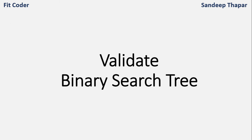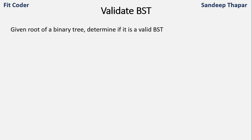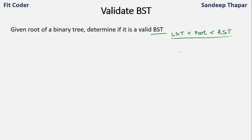In this video we will discuss how we can validate a binary search tree. We are given a binary tree and we have to find out whether it is a valid binary search tree. For a binary tree to be a BST, it should satisfy the property that the left subtree nodes should be less than the root node, which should be less than the right subtree, and this property should hold true for each node of the tree.